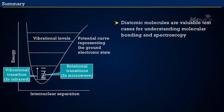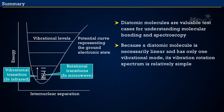Summary: In this lesson, you have learned that diatomic molecules are valuable test cases for understanding molecular bonding and spectroscopy. Because a diatomic molecule is necessarily linear and has only one vibrational mode, its vibration-rotation spectrum is relatively simple. You have learned about the IR, microwave, and rotational Raman spectroscopy of diatomic molecules.